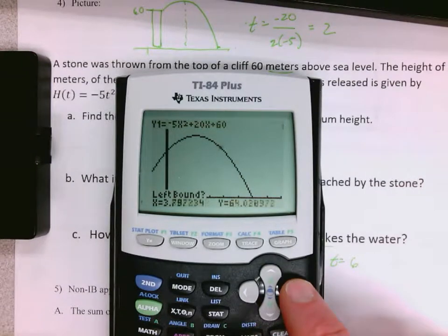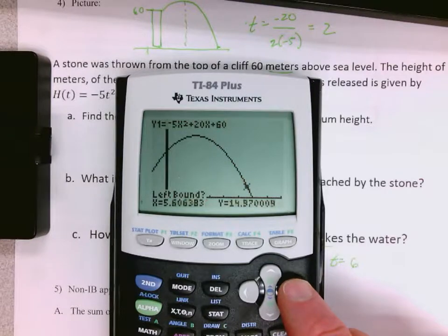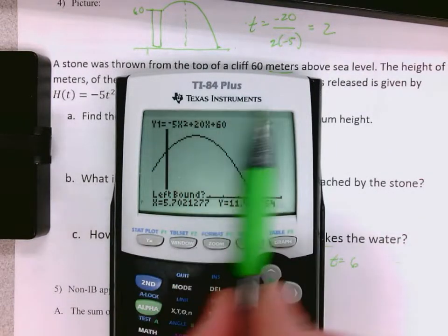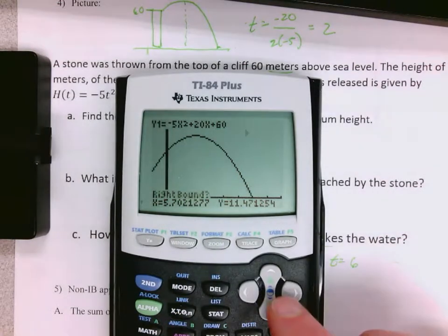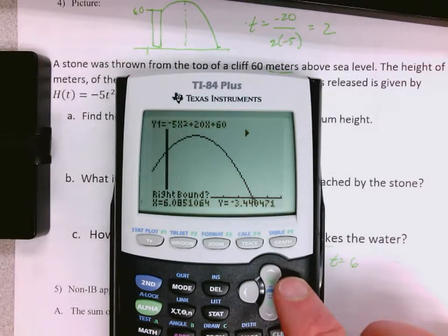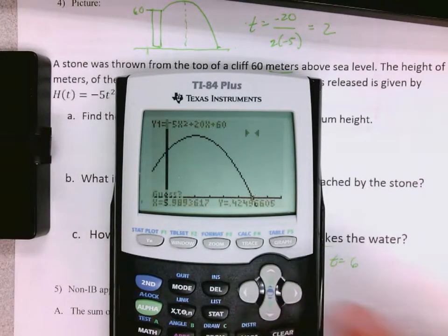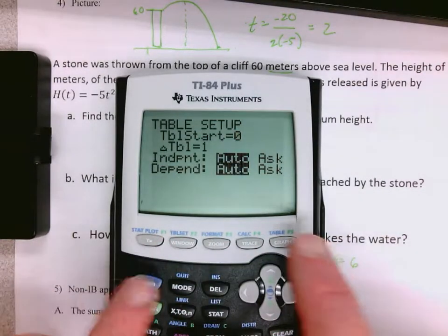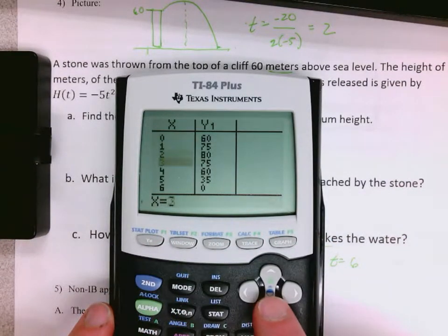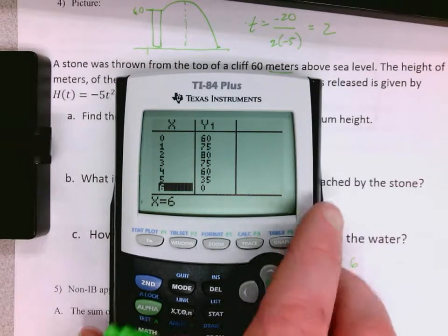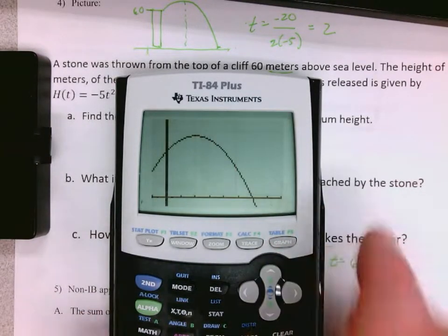I can calculate the zero. You would love it if it said go right on it and push enter, but it says left bound, so I need to go to the left. Hit enter. It says go to the right, hit enter. And go right on it and make a guess: 6, zero. I could also go to my table and see if it's a zero. That's all nice when it's an integer - it's not always going to be an integer.